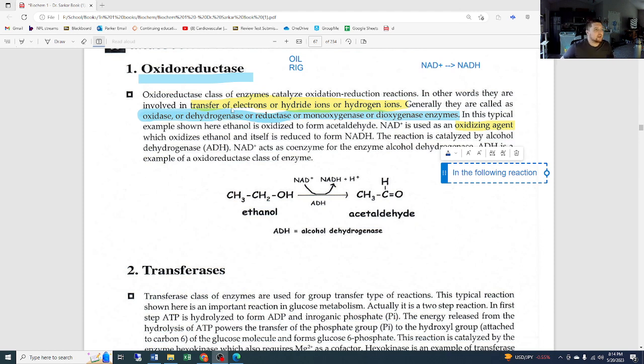All those markers, those are all AKAs of the same thing: oxidoreductase or oxidase enzymes. In this typical example here, we have ethanol being oxidized to form acetaldehyde. This is a really common example you'll see a lot in tests and other reactions in this class. NAD+ is used as an oxidizing agent which oxidizes. The oxidizing agent is what is going to be reduced to allow the oxidation to occur.